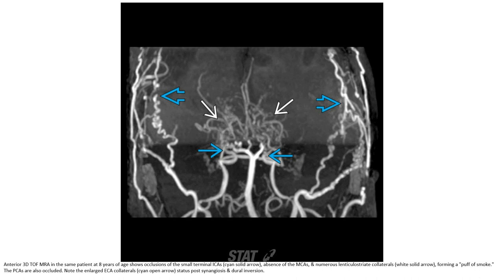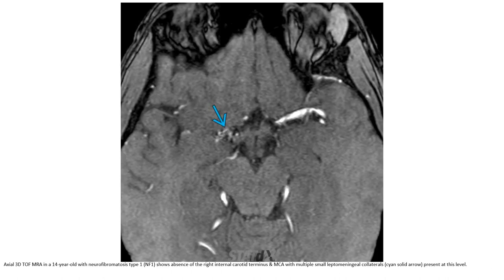This is the 3D TOF MRA in the same patient at eight years of age, showing occlusion of the distal ICA, absence of the MCA, and numerous lenticulostriate collaterals forming a puff of smoke. The PCAs are also occluded, with large ECA collaterals, status post synangiosis and encephalodural arterial synangiosis.